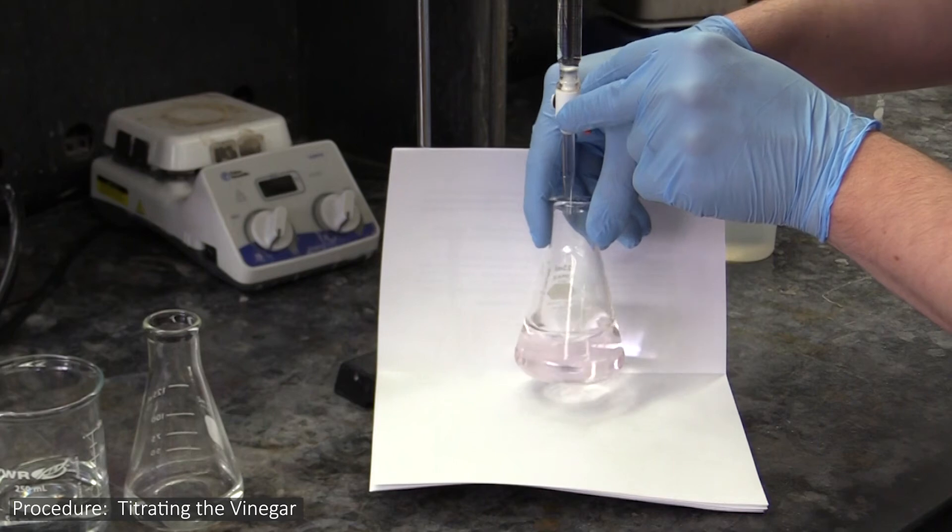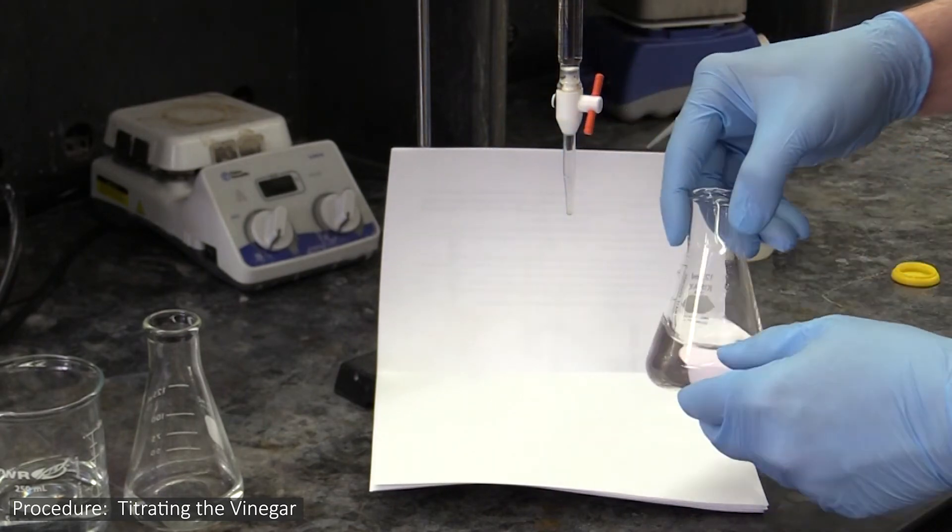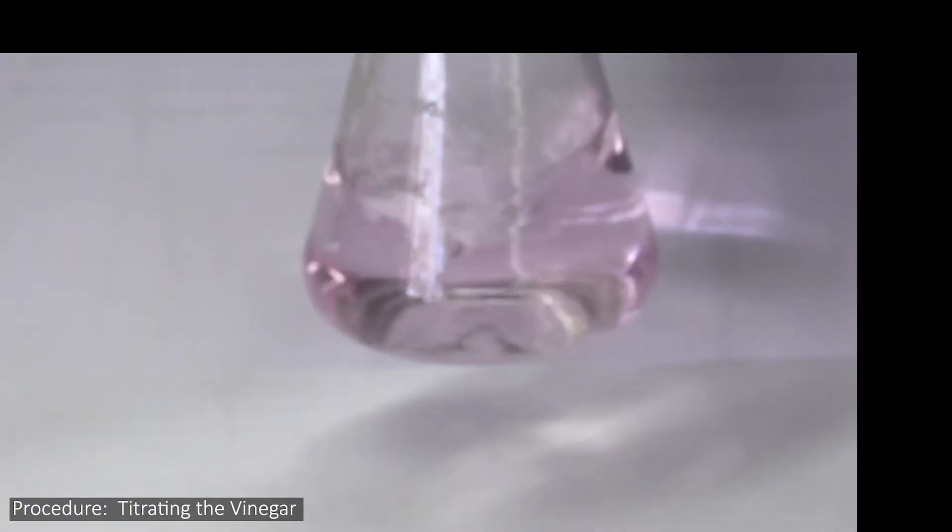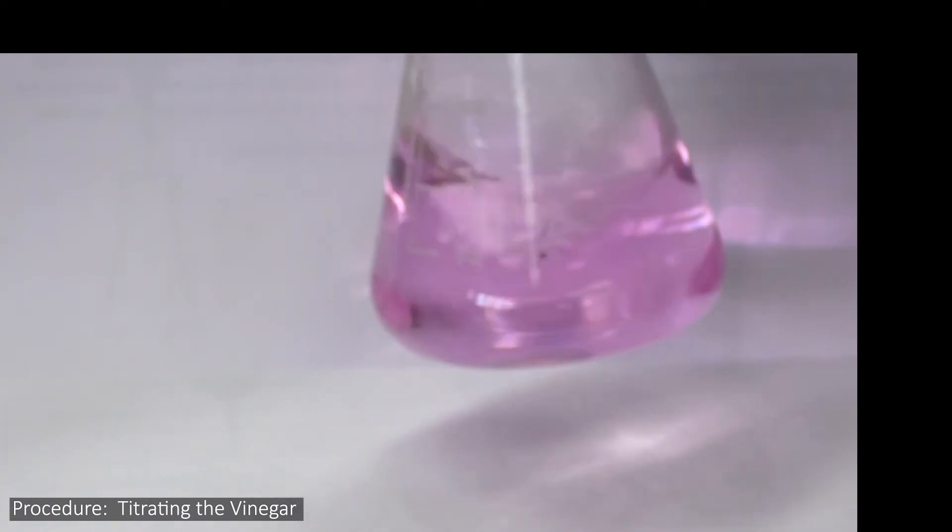For your titrations, you want to bring your solutions to a very pale magenta color that is just visible against a white background. If you add too much sodium hydroxide, you may overshoot and your solutions will look like this, with a prominent obvious color.